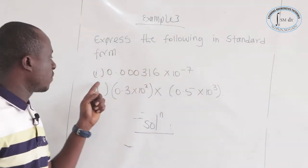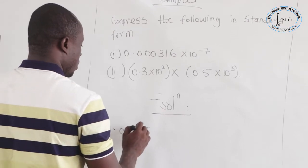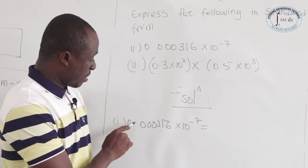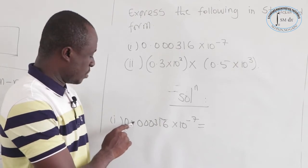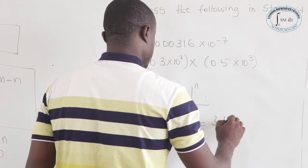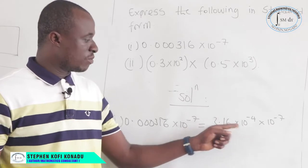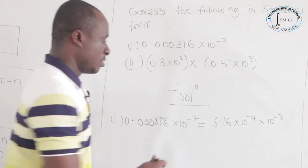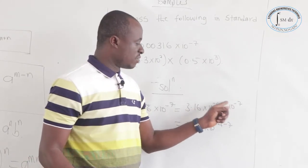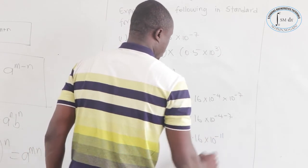Express the following in standard form. The first one: 0.000316 times 10 to the power negative 7. The point is here, so let's put 0.000316 in standard form by moving: 1, 2, 3, 4. This gives 3.16 times 10 to the power negative 4, times 10 to the power negative 7. Since the bases are the same, we add the exponents: negative 4 plus negative 7. So we have 3.16 times 10 to the power negative 11.